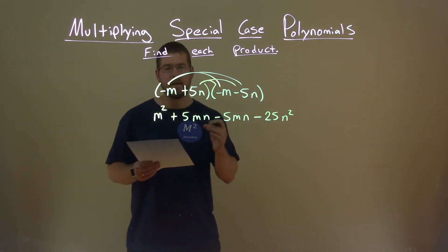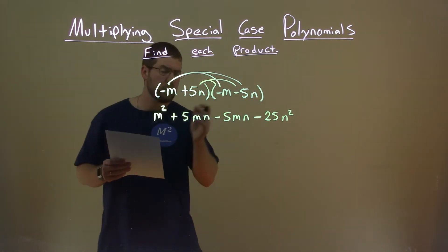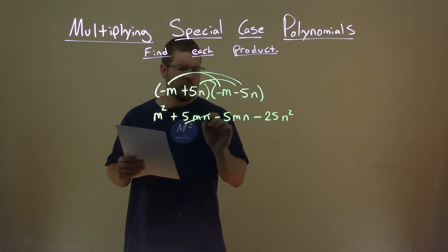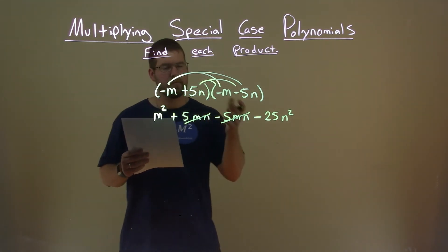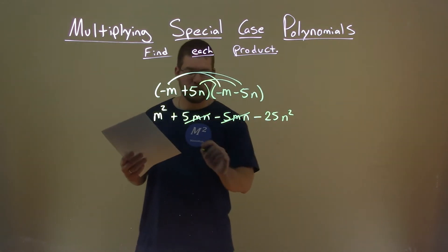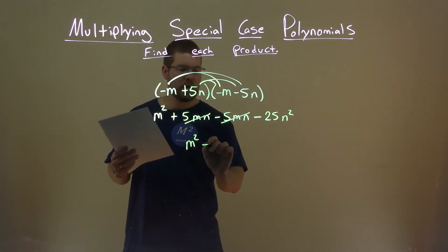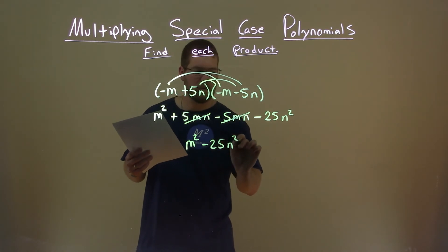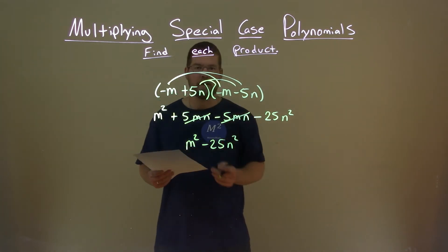Now we need to combine our like terms. Notice the inside part: 5mn minus 5mn are the same. In subtraction, they cancel each other out, leaving us with m squared minus 25n squared, and that is our final answer.